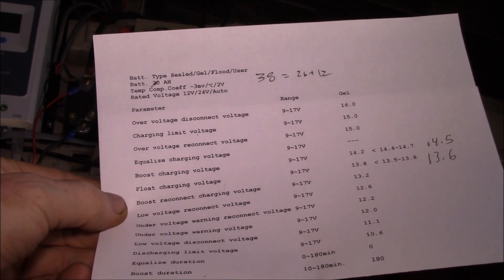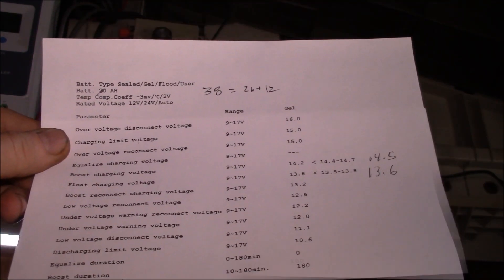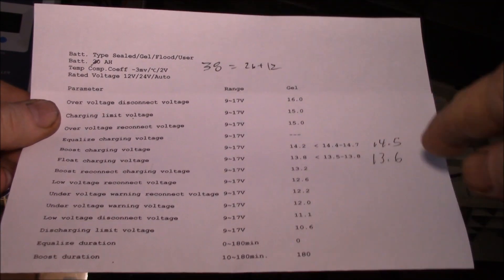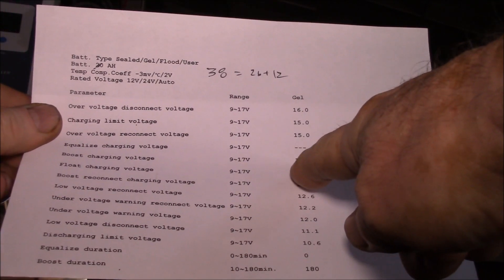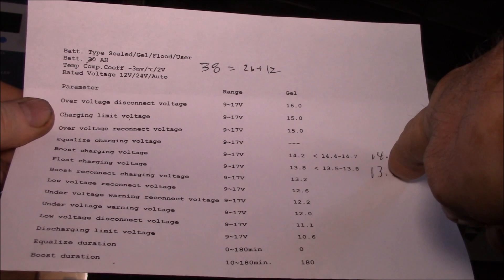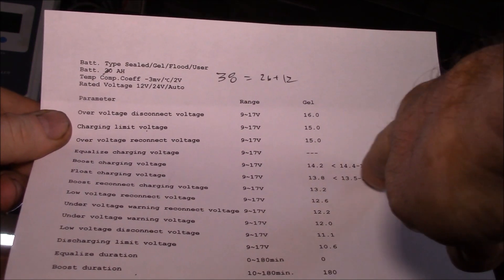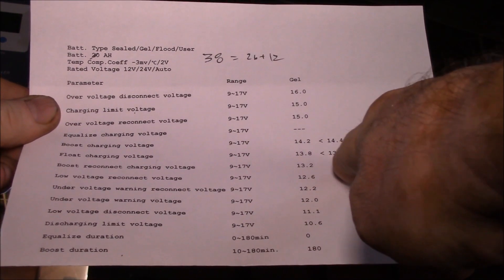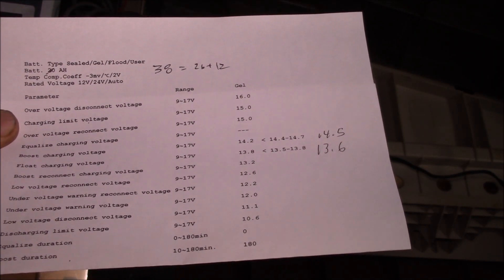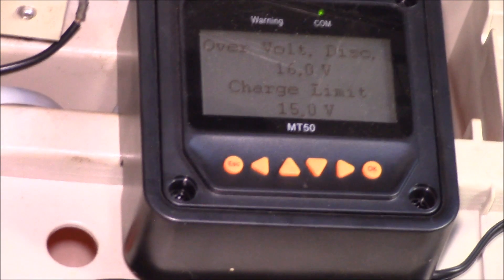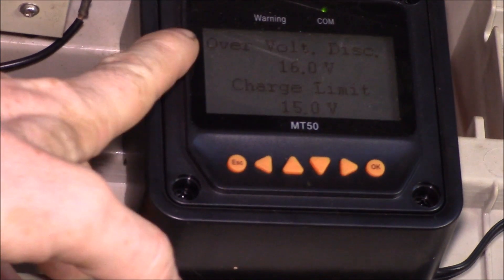I did this in a text file, I'll put a link to this text file up on my Google Drive page and put that link in the video description. I've got all these voltages and then I marked the ones that I want to change. I might want to change this 14.2 to maybe 14.5, pick the middle of that range, and drop the float charge voltage a little bit.